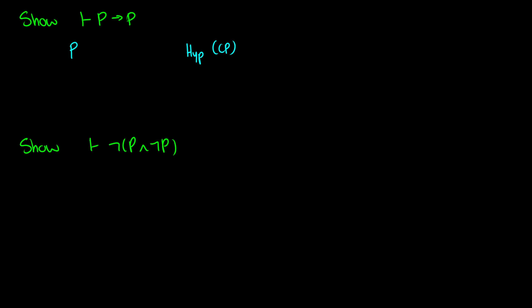This just isn't given anymore — it's not information we start with that is guaranteed to be true, it's just a hypothesis. If we have P, then in line 2 we can just reiterate it. Then in line 3 we can pull out P→P, because from lines 1 to 2 through a conditional proof, we assumed P and got P. So this is the proof that P→P is a theorem.